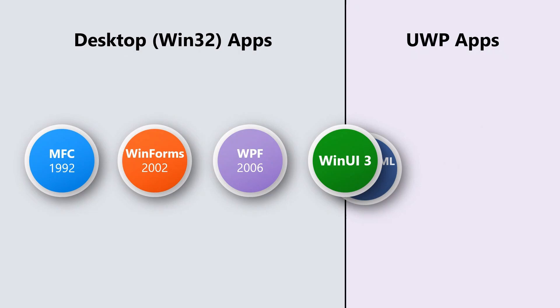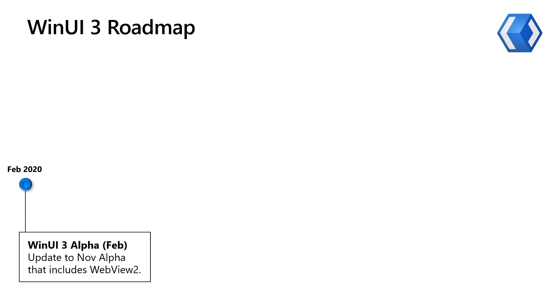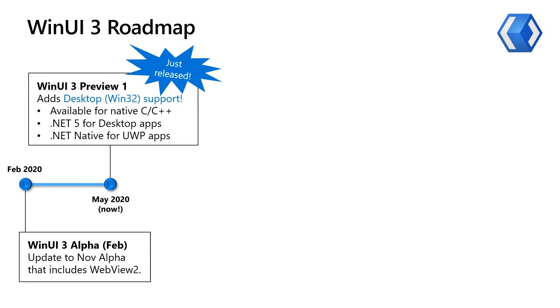To give you a sense of what's coming for WinUI 3, let's walk through our latest roadmap. In February, we refreshed our WinUI 3 alpha and added the WebView 2 control, which is based on the Chromium web engine. Today, we released WinUI 3 Preview 1 — a big release, and the first release of WinUI 3 that allows desktop style or Win32 apps to participate with WinUI, in addition to continued support for UWP apps. We'll talk a little more about Preview 1's capabilities in just a bit.